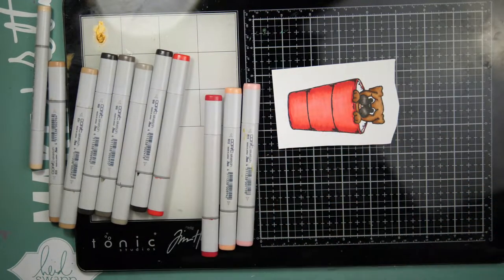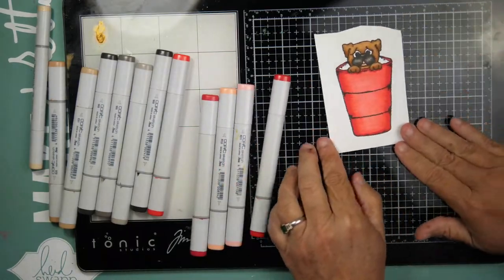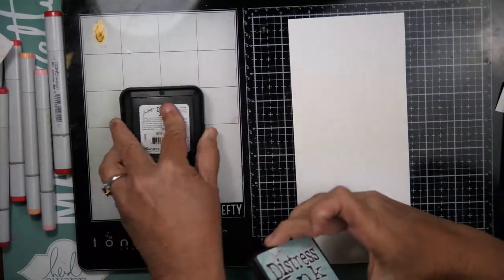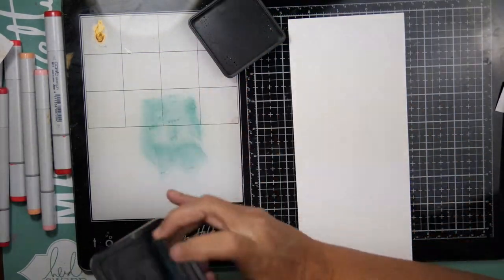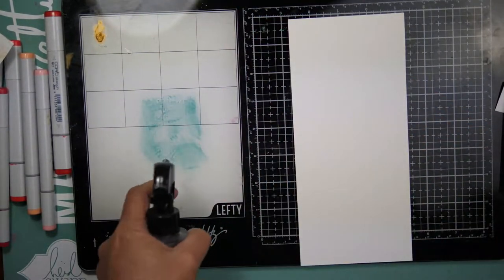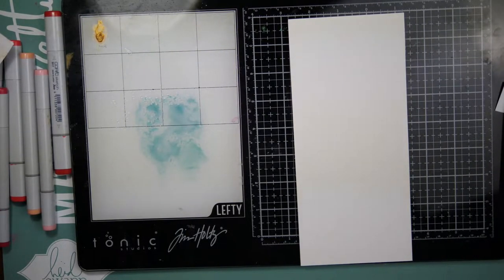I am going to do a little bit of fussy cutting today, believe it or not. I have been doing a little bit more and more. Oh my goodness, look at that! That is my brand new Speckled Egg Distress Ink, and the pad was not adhered to the bottom of the plastic container.